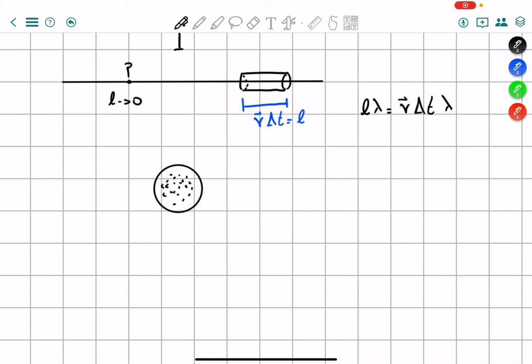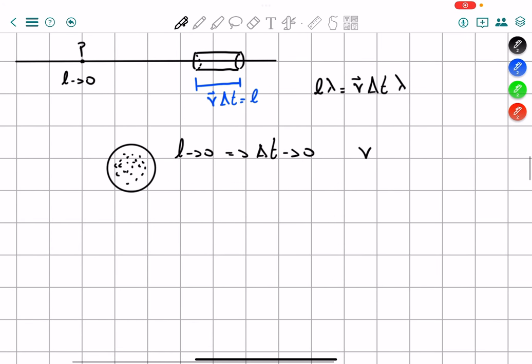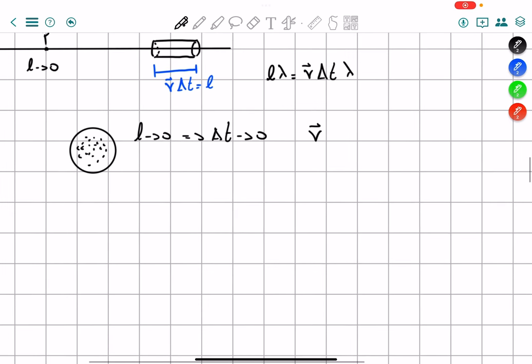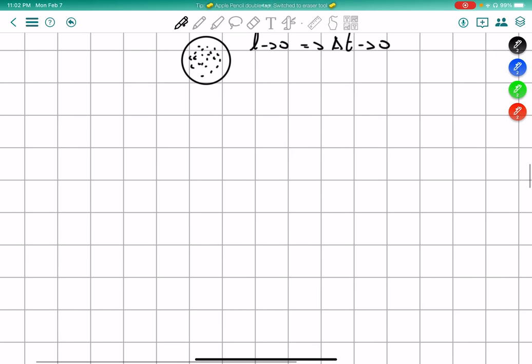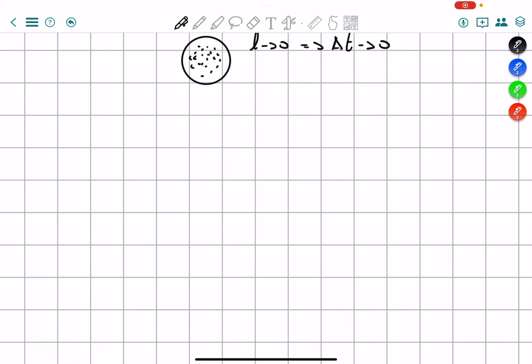And this means that the only way to get L approaching zero is going to be by making delta T approach zero. And then in our case, V never approaches zero. We cannot really make it approach zero. Well, we could if there's no current, but at that point there's no current, because of course there's no flow of electrons. So V does not approach zero, but our delta T approaches zero.